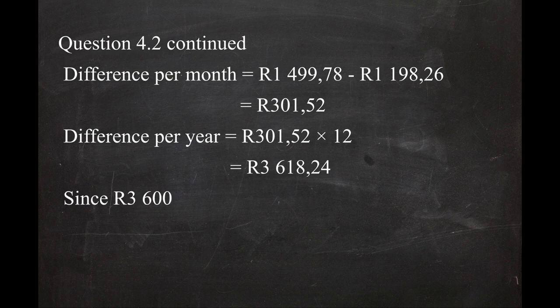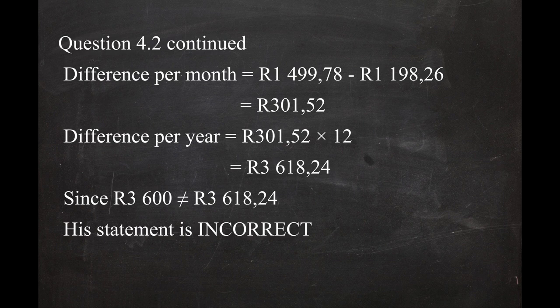Since John stated that the cost per year in Cape Town will be R3,600 more than Ekurhuleni, but you have proved it is actually R3,618.24 more, you must state that John's statement is incorrect. Not making this final statement will result in losing one mark.